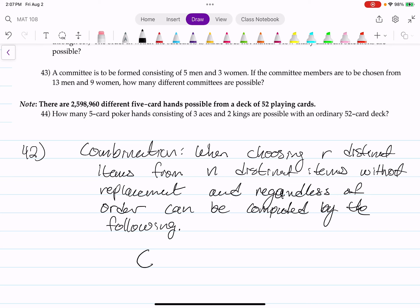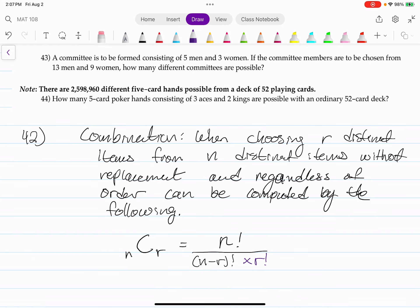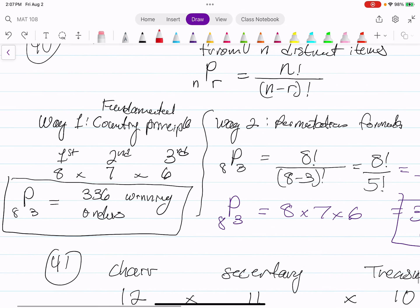A combination of n items choose r equals to n factorial divided by the quantity of n minus r factorial. But then I'm going to put this in a different color. There is another times r factorial in your denominator. I want to highlight a certain part of this formula, my numerator and this part of our denominator.